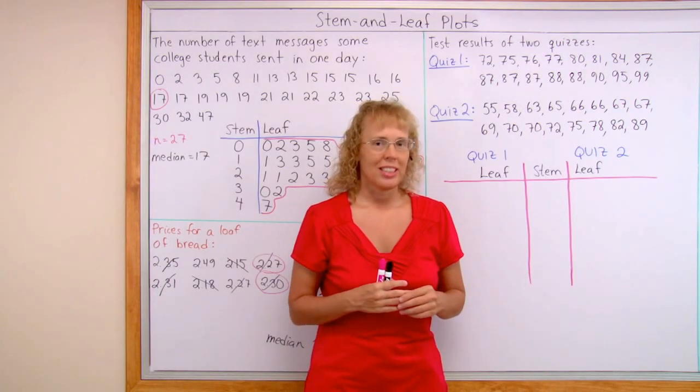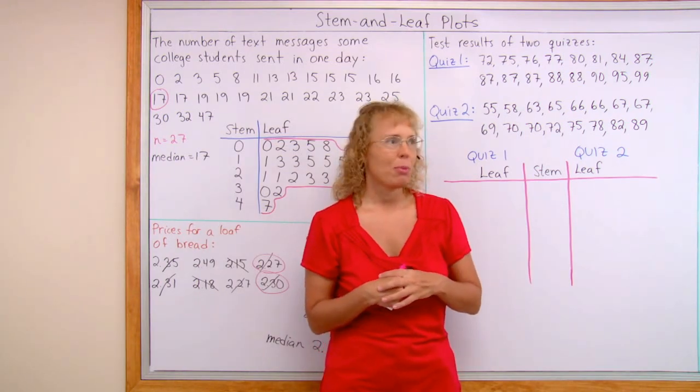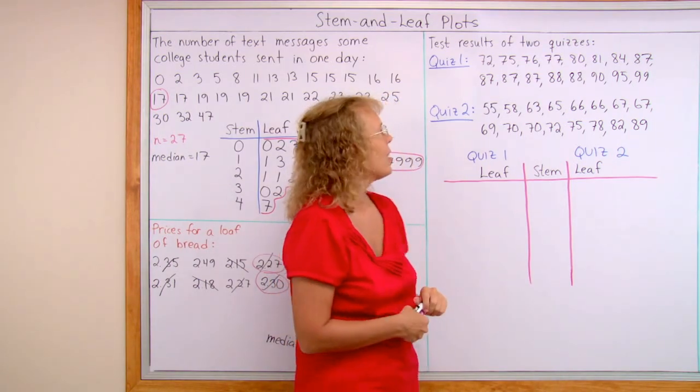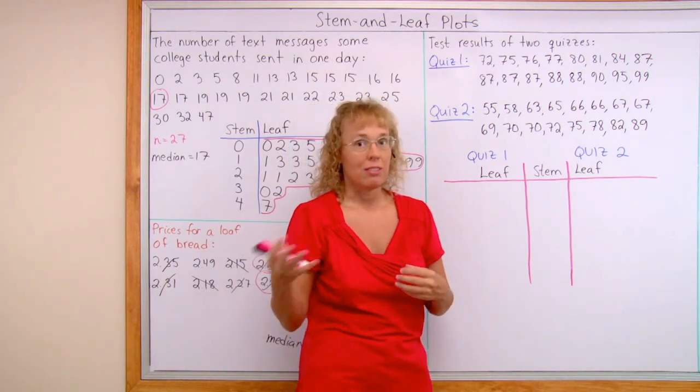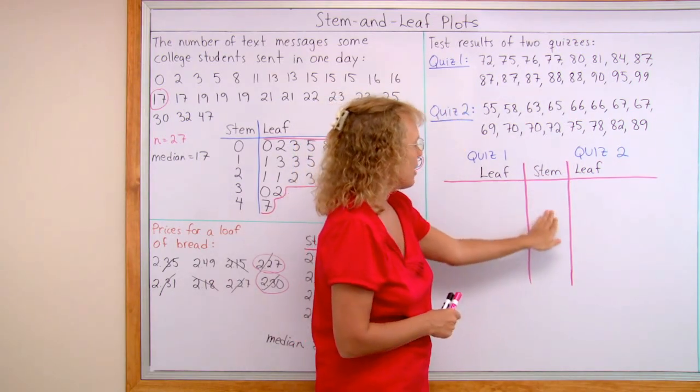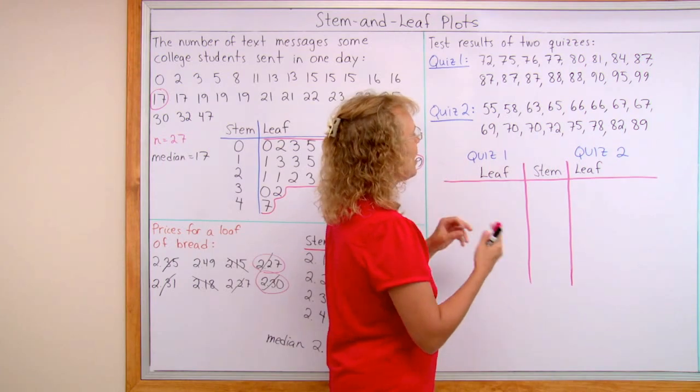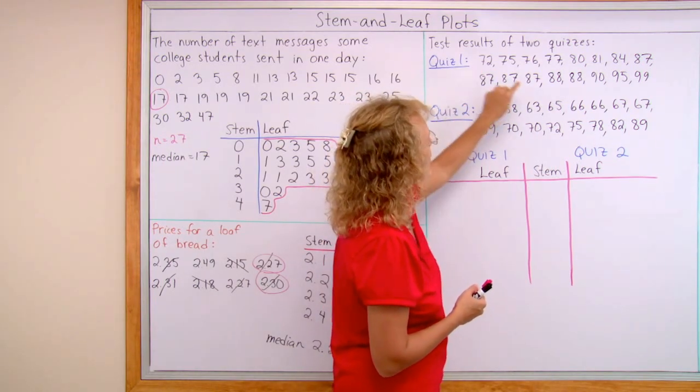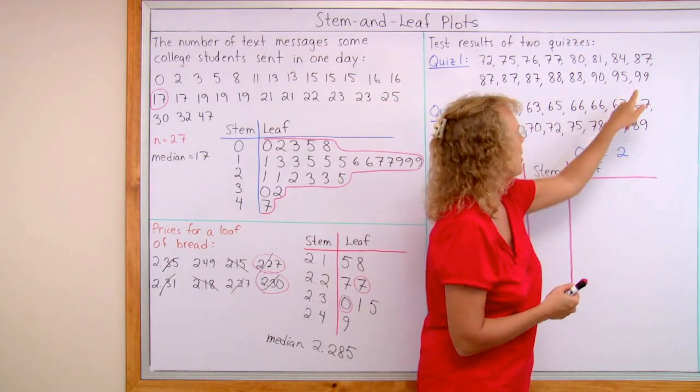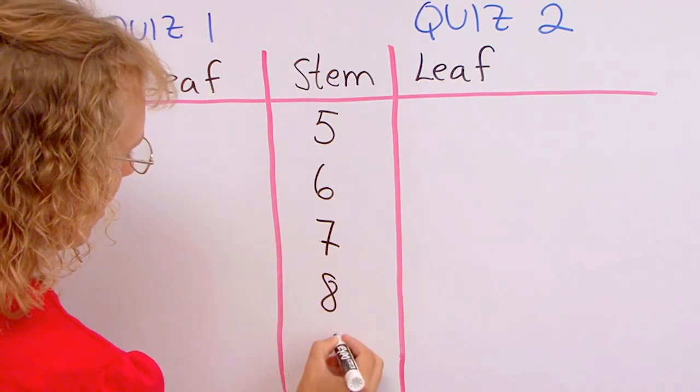Lastly, we're going to make a double stem and leaf plot to compare two sets of data. It's also called a back to back stem and leaf plot. And the two sets of data are test results of two quizzes. Maybe it was the same group of students taking two quizzes at two different times, for example. And quiz one is here, quiz two here. For the stems, I'm again going to use the tens digits. This time I need to check both sets of data. What kind of tens digits are there? There's 70, 80, 90. Here it starts with 50 something. So I need to go from 50 till 90. So the stems will start with five, five tens: five, six, seven, eight, nine.